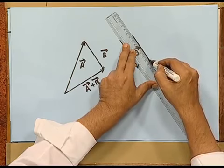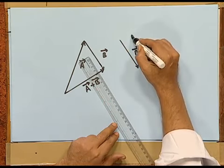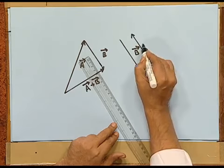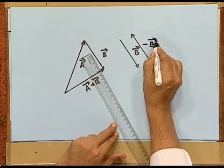If I draw a vector parallel to b with the same magnitude but in the opposite direction, we call this the negative of vector b, because it is anti-parallel to the direction of b. If you want to add vector minus b to vector a, how do we do it?